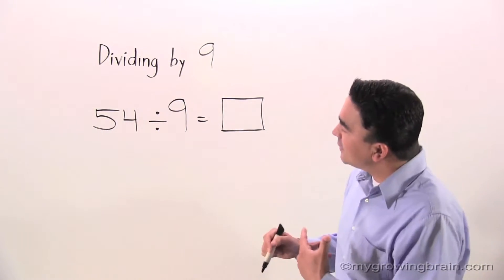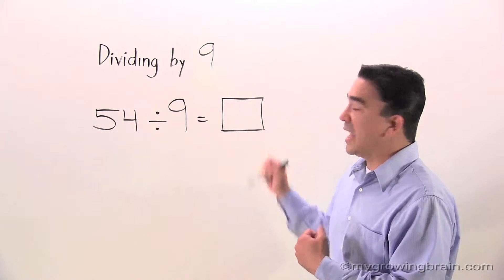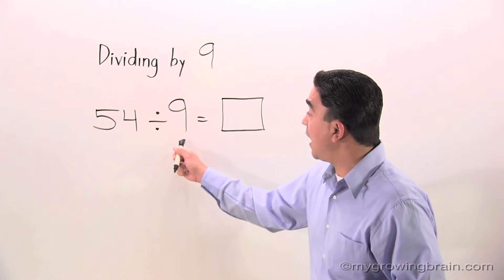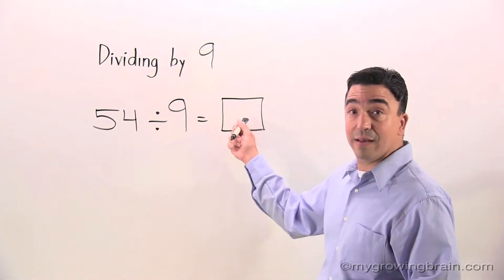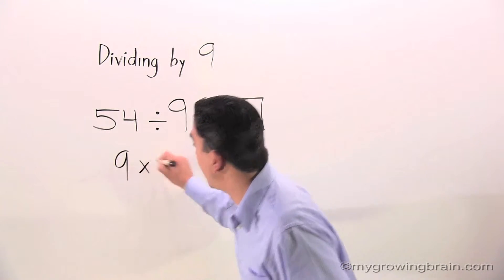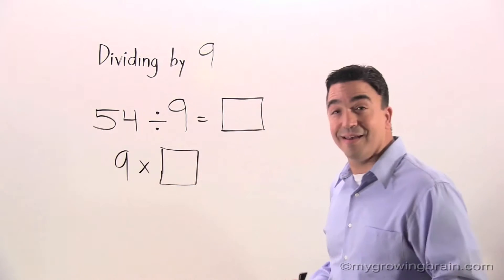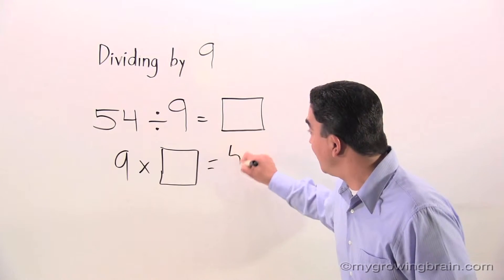So look at the board here. Let's think about this. 54 divided by 9 is equal to blank. It's the same thing as saying 9 times blank equals 54. Let me show you.